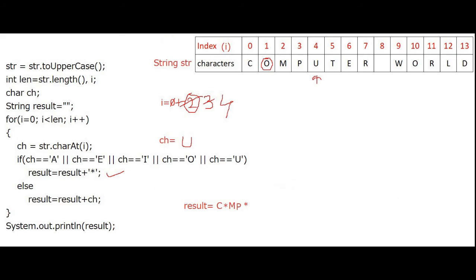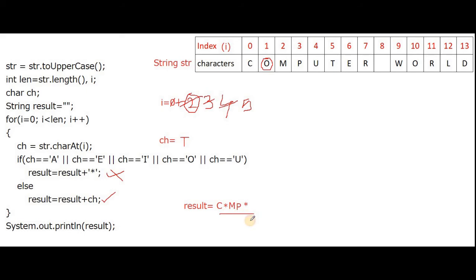Again i++, next iteration is 5. The value at position 5 is 'T'. With the help of str.charAt(i), T is now extracted and stored into CH. Checking whether T is a vowel — of course T is not a vowel. So the if-statement is not executing, the else statement executes: with the last value of result, T is stored, giving C*MP*T.